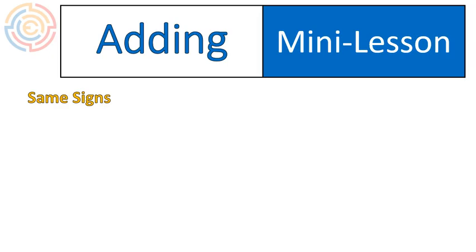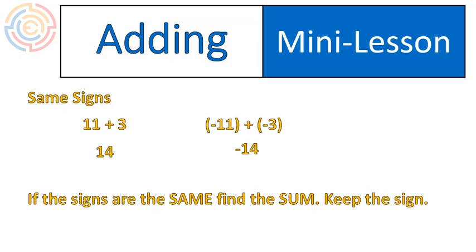If the signs are the same, it will look a lot like this. 11 plus 3, that gives you 14. Negative 11 plus negative 3 gives you negative 14. The rule for adding integers when the signs are the same is this. If the signs are the same...